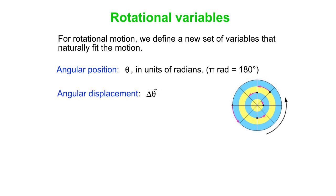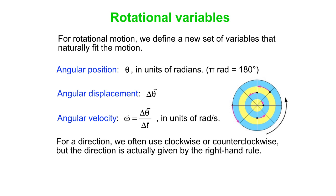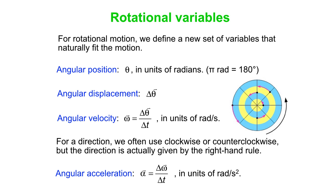Angular displacement is delta theta. Angular velocity is omega — omega equals delta theta over delta t, with units of radians per second — totally parallel to the position and velocity definitions. Angular acceleration is alpha, where alpha equals delta omega over delta t. For direction, we use clockwise or counterclockwise, but the true direction is given by a right-hand rule: curl the fingers of your right hand in the direction the wheel is spinning, and your thumb points out of the page — that's the direction of the angular velocity.